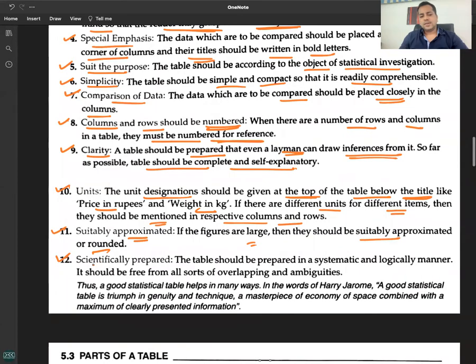Number twelve: Scientifically prepared. The table should be prepared in a systematic and logical manner. It should be free from all sorts of overlapping and ambiguities. Thus, a good statistical table helps in many ways.